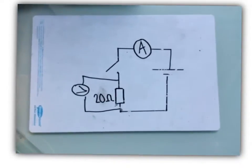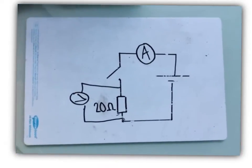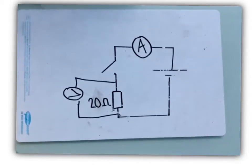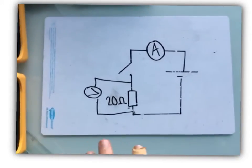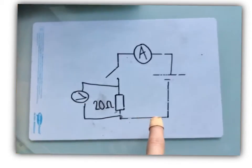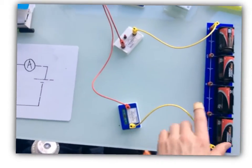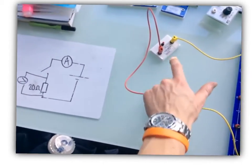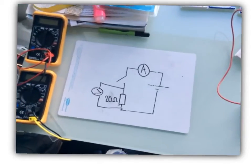In this video, we're working towards plotting IV characteristics of components. First, I'm going to look at how to take measurements in a circuit. We're going to build this circuit here with our battery pack, resistor, and switch showing the diagram. We'll show you how to use the multimeters to take measurements.